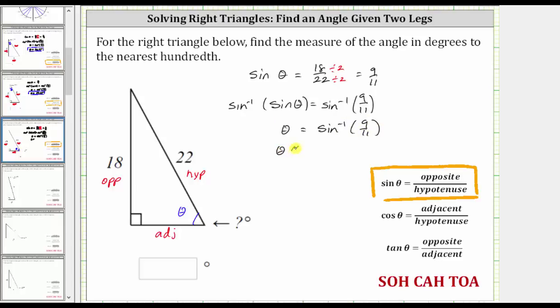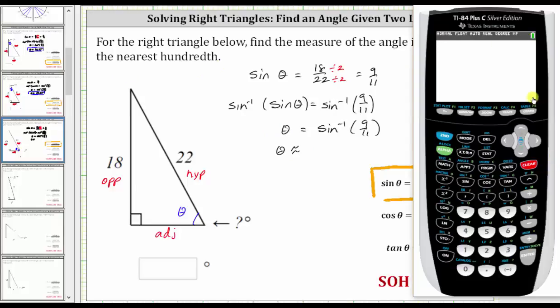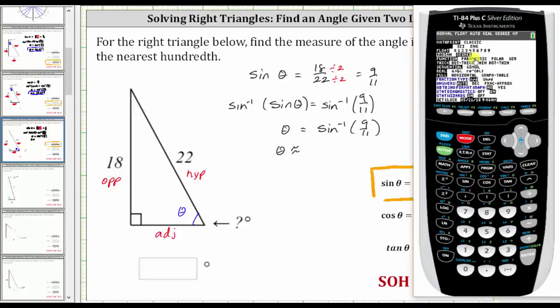And now we go to the calculator to get a decimal approximation for angle theta in degrees to the hundredths place value. We first make sure the calculator is in degree mode by pressing the mode key. Notice how degree is highlighted. If degree is not highlighted, we use the arrows to go down to degree and press enter. And then we go back to the home screen by pressing second mode for quit.